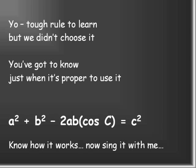Use it wisely, and don't you whine. It's a tool to learn, but we didn't choose it — you've got to know just when it's proper to use it. A squared plus b squared minus 2ab cosine C equals c squared. You know how it works, now sing it with me.